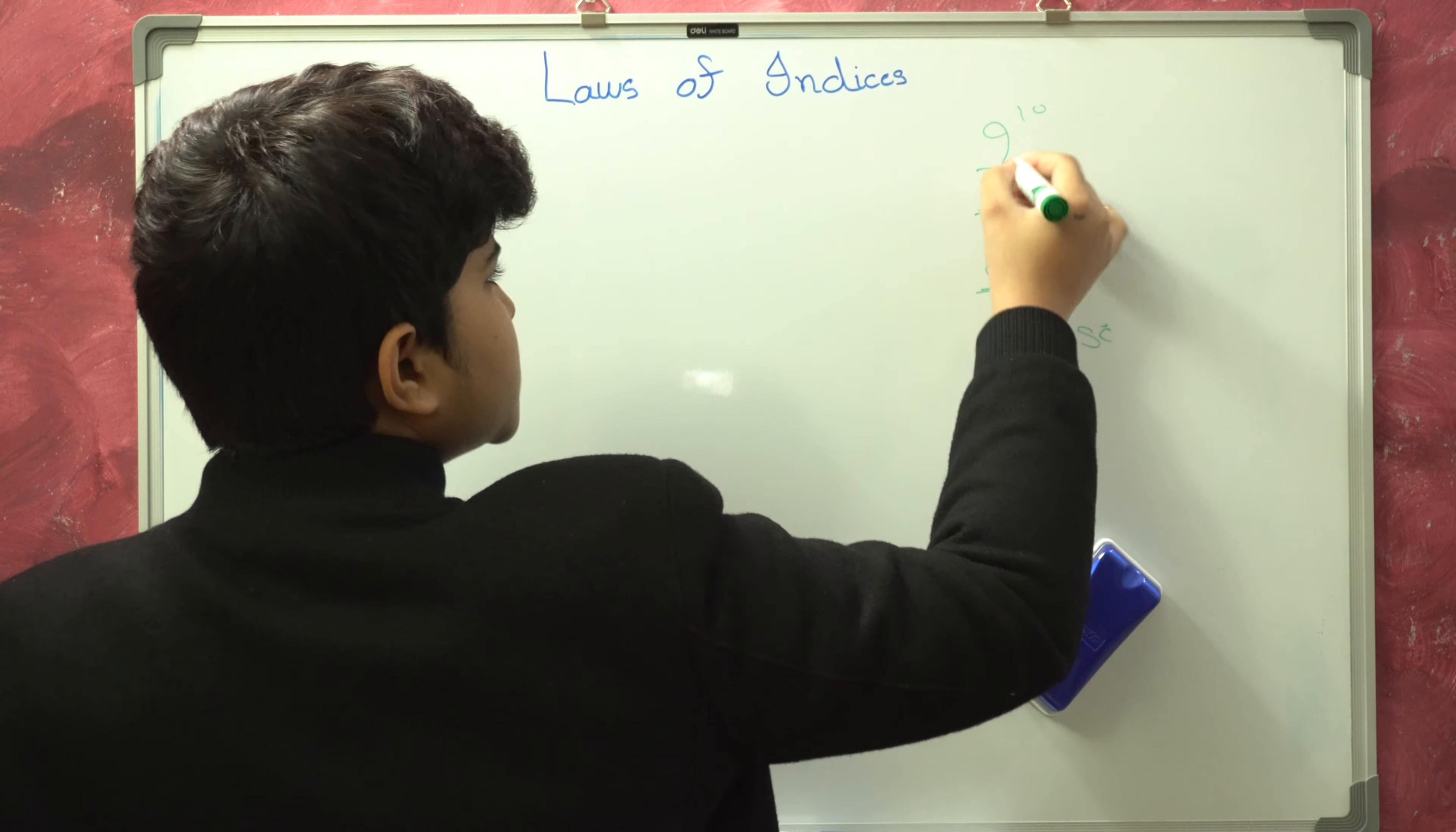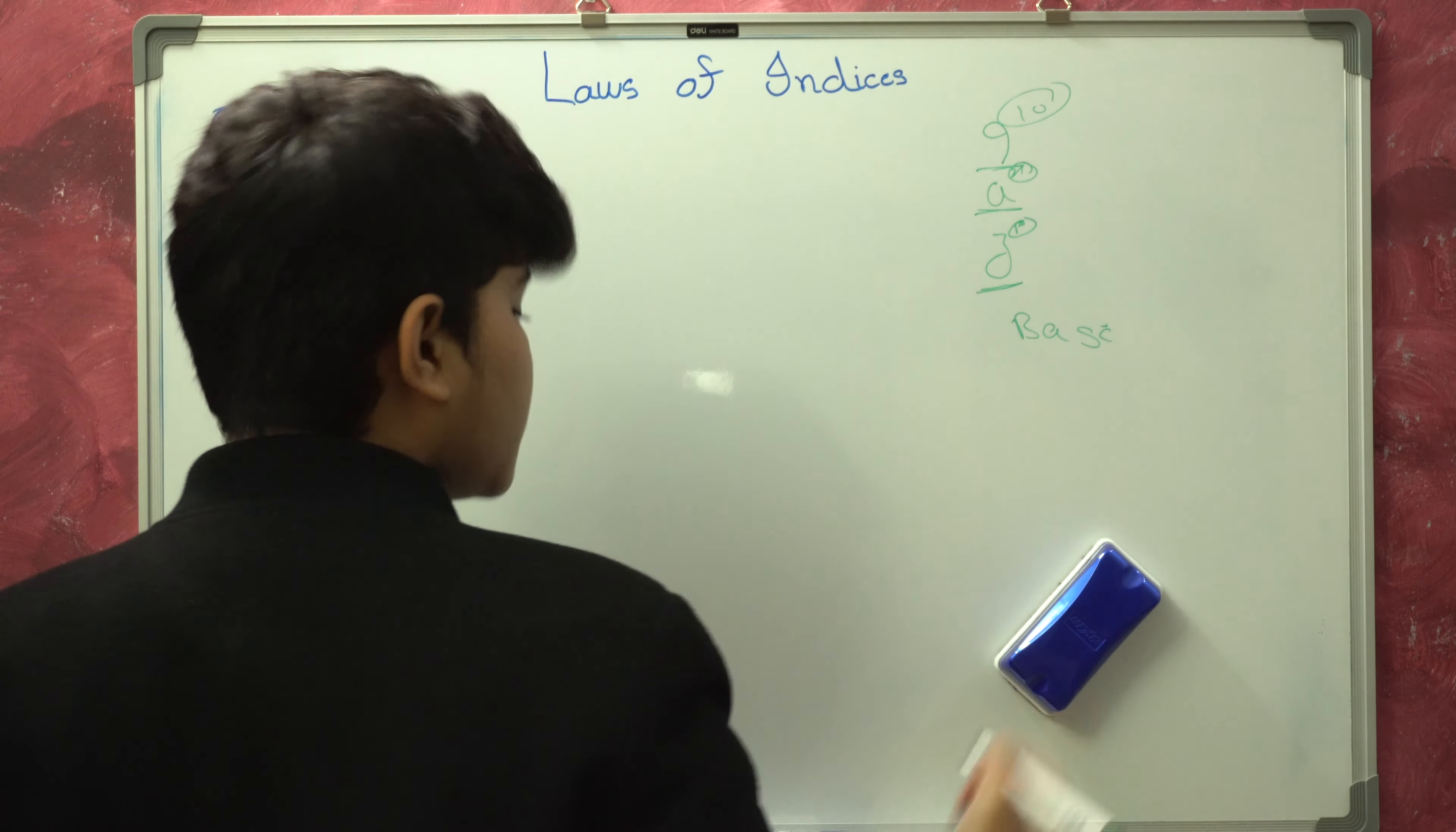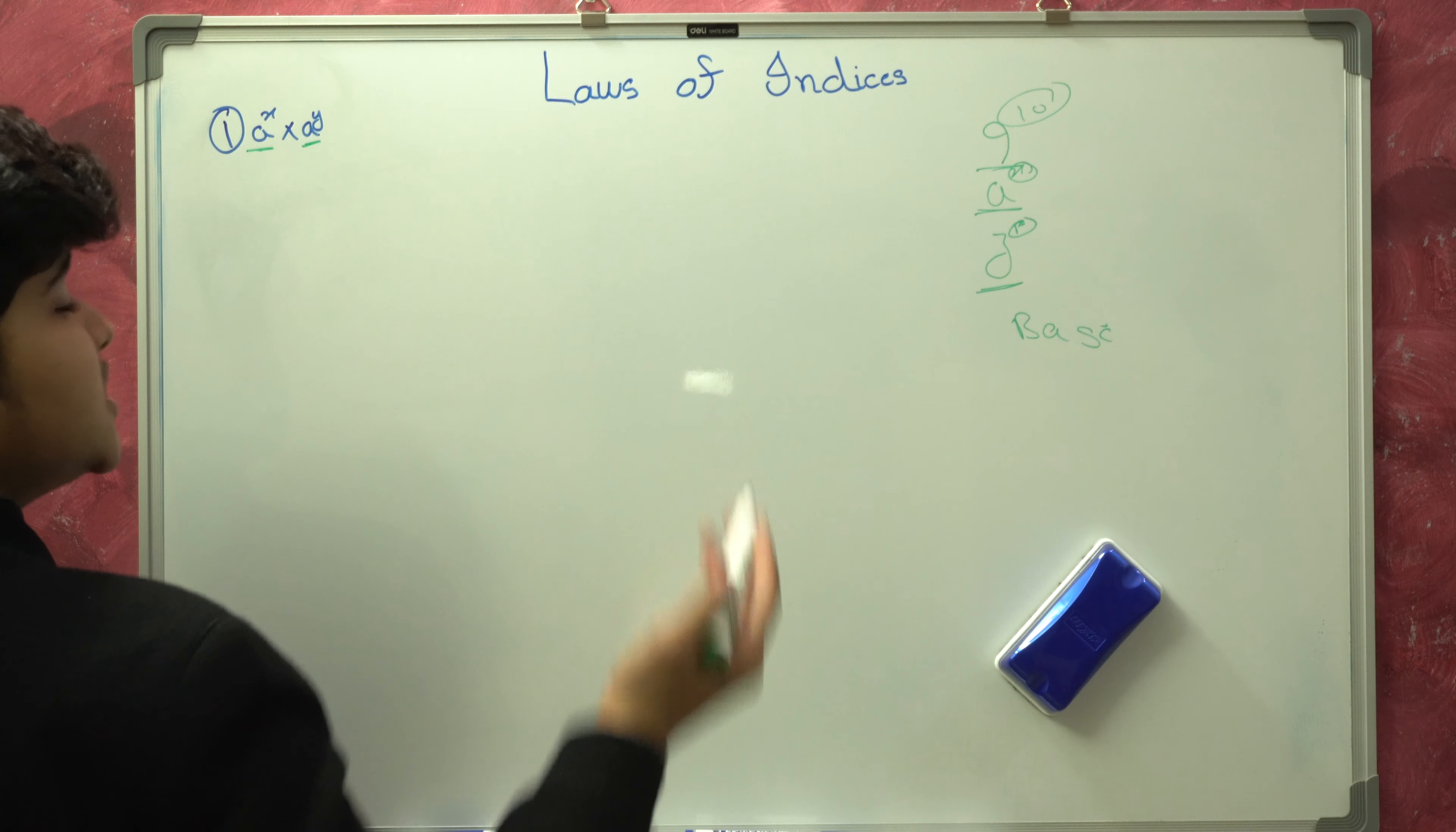If the power is on above in a small size, these are the powers or the indices. Over here, A and A, both the bases are same.